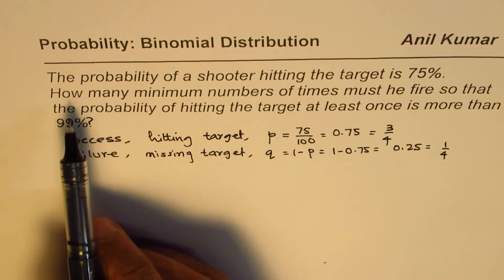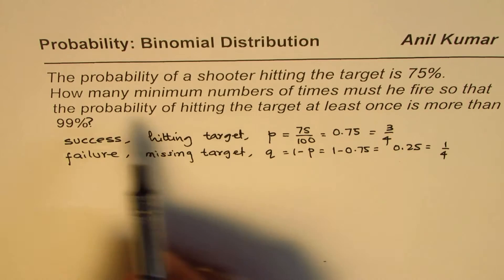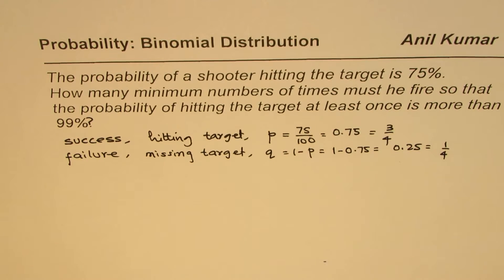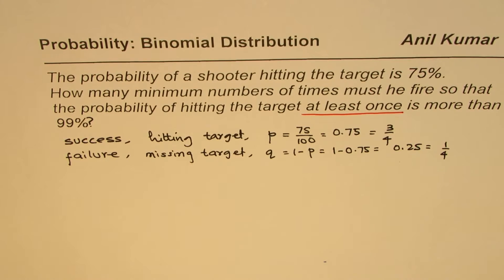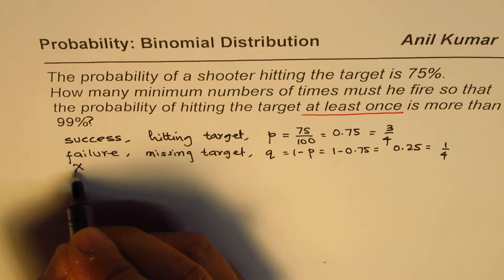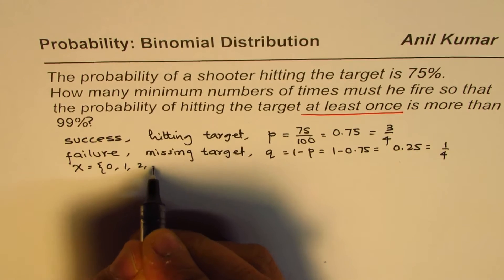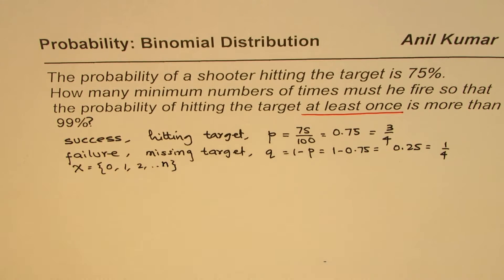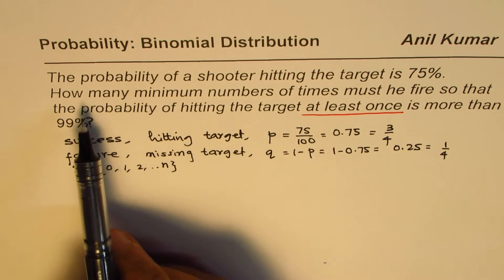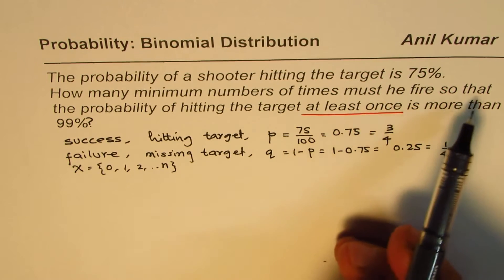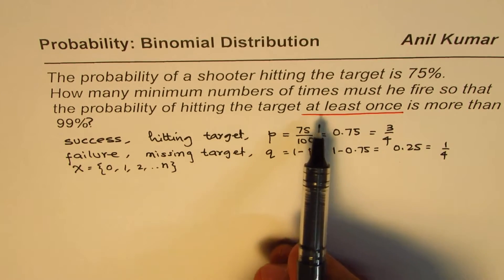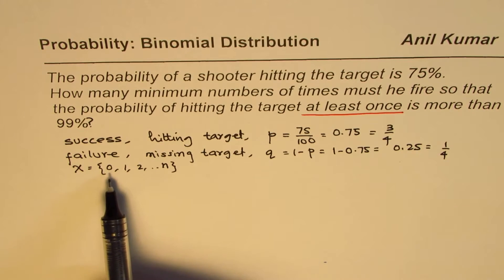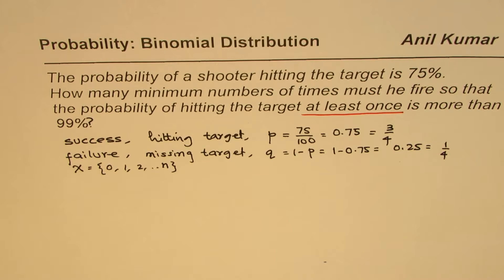Let's look at the problem again: how many minimum number of times must they fire so that the probability of hitting the target at least once is more than 99 percent? 'At least once' means the random variable x can be 1, 2, up to n. The minimum number of trials is n, and P(x ≥ 1) > 0.99. We can express this as either the sum from 1 to n, or as 1 minus P(x = 0).